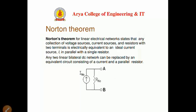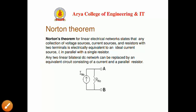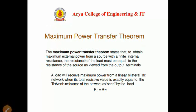Norton's theorem is almost similar to Thevenin's theorem, but with a key difference. Norton's theorem states that any collection of voltage sources, current sources, and resistors with two terminals is electrically equivalent to an ideal current source in parallel with a single resistance. In Thevenin's theorem we replace the circuit with an equivalent voltage source in series with a resistor, whereas in Norton's theorem we replace it with an equivalent current source in parallel with a resistor.